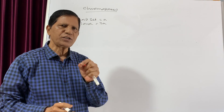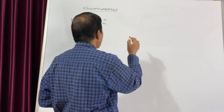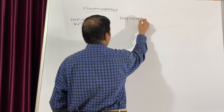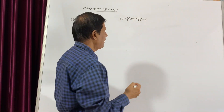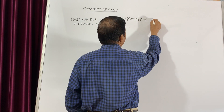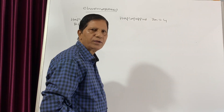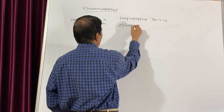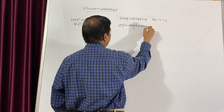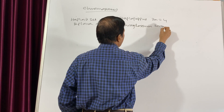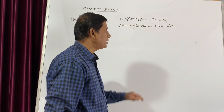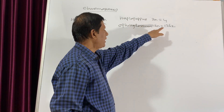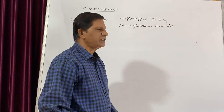The lowest number of chromosomes in plants is found in Haplopappus, a member of the Asteraceae family, where 2N is equal to 4 — the smallest number. While in case of Ophioglossum, a type of fern, 2N is equal to 1262 — the largest number. So that means N will be 2 here, and 631 there.